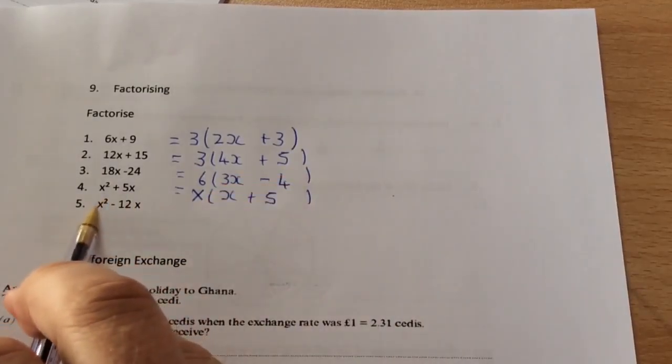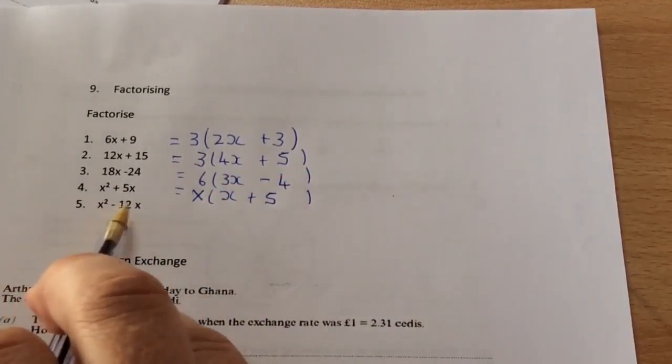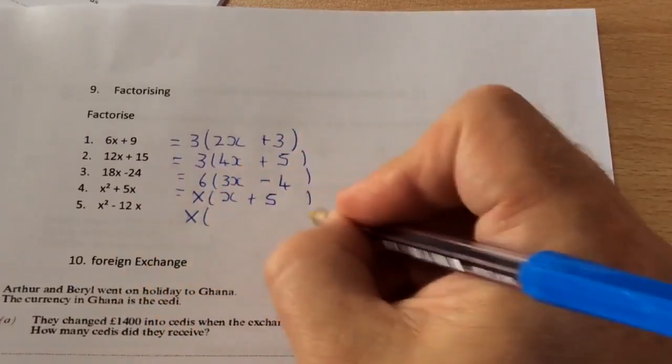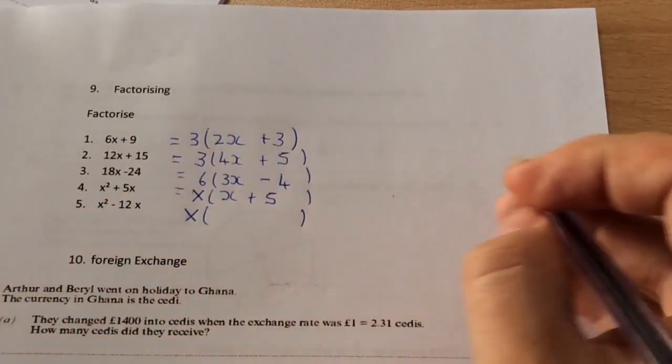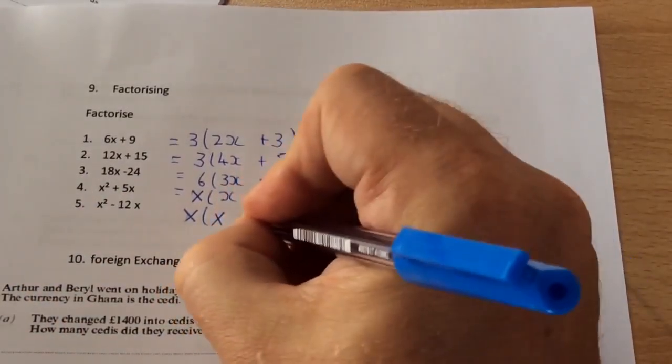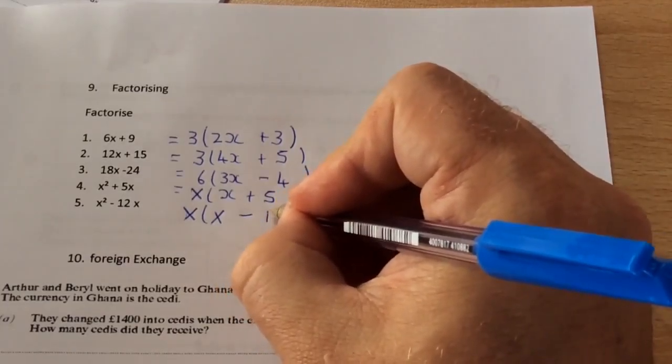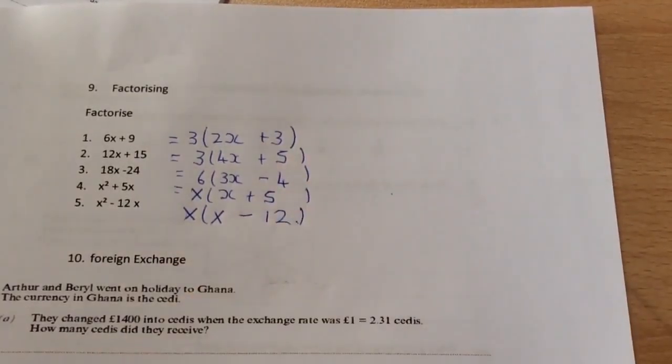And the last one, a similar method. 1 is the highest number that goes into them, so I'm going to have to take x out as a common factor. So how many x's in x squared? x. How many x's in minus 12? The answer's minus 12.